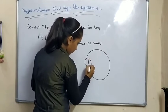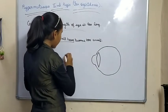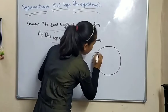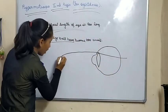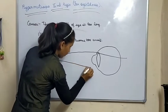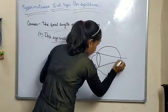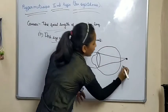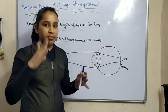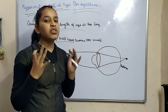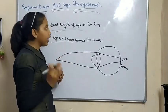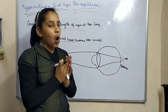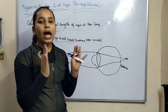Now what can we do for correcting hypermetropia? The use of a convex lens can be a cure for hypermetropia. If we use a convex lens, it will diverge the rays, and the image will form correctly on the retina.